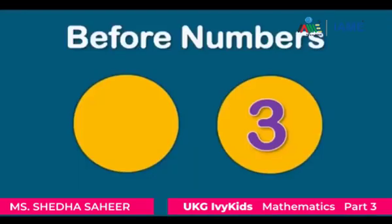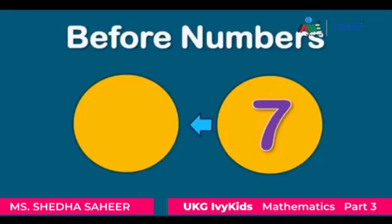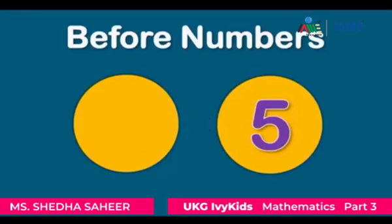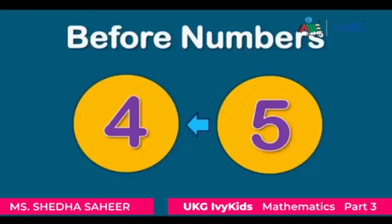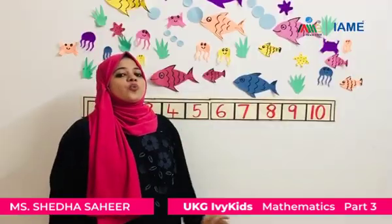What comes before four? Three is the number that comes before four. What comes before three? Two is the number that comes before three. What comes before seven? Six is the number that comes before seven. What comes before nine? Eight is the number that comes before nine.